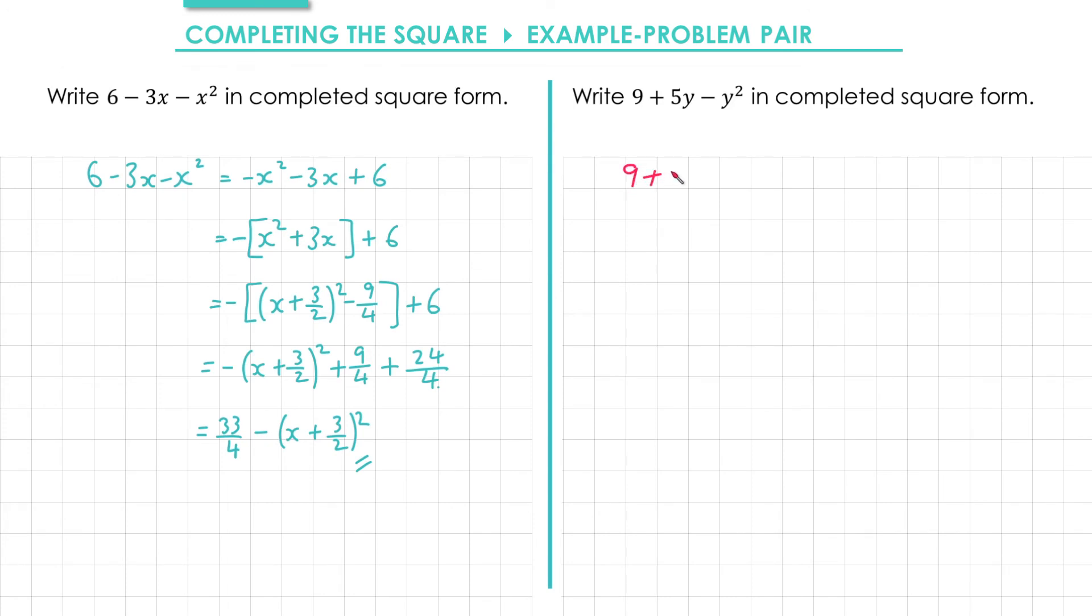Like in the example, I'll start by reordering the terms. So we have minus y squared plus 5y plus 9.